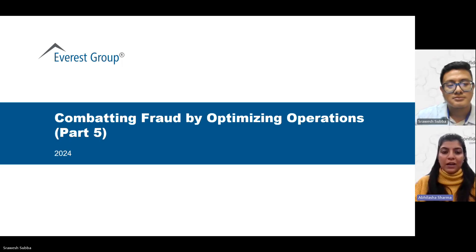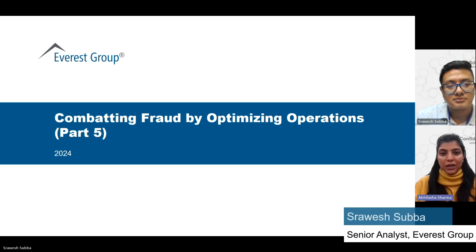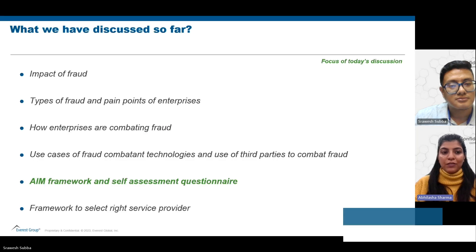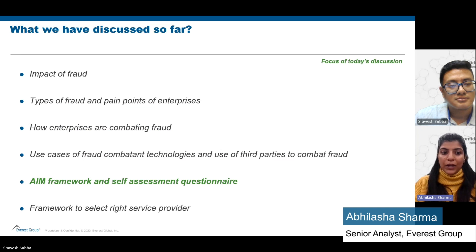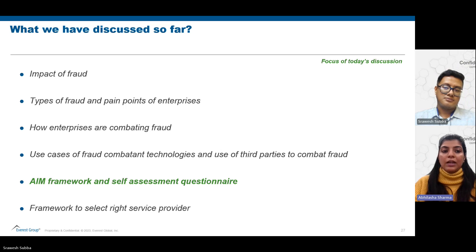Welcome back to the fifth part of our video series, 'Combating Fraud by Optimizing Operations.' We'll give you a quick recap of what we've covered so far. We started off with the impact of fraud that financial enterprises face, both in terms of financial losses and reputational damages, and then uncovered various types of emerging as well as conventional fraud.